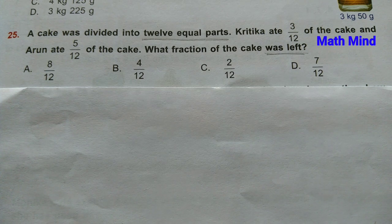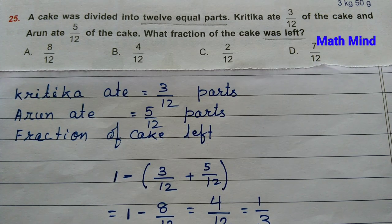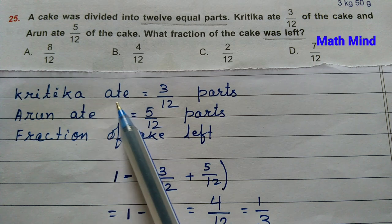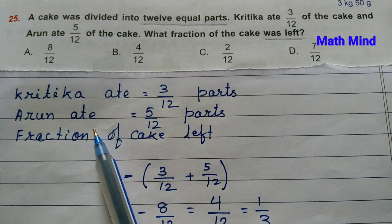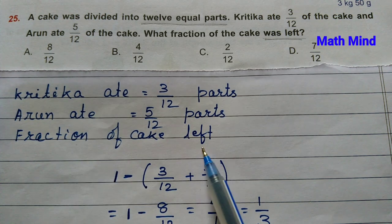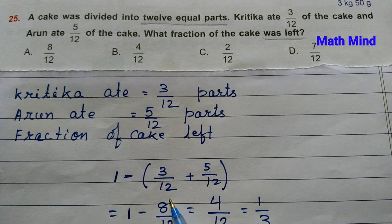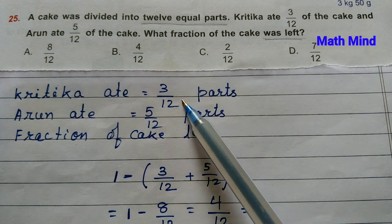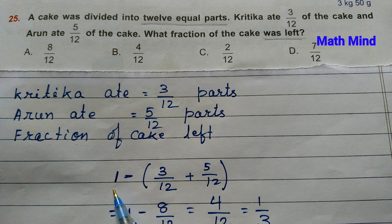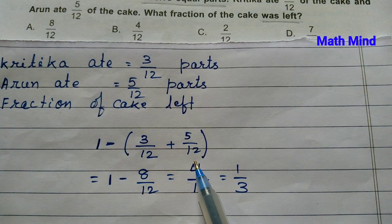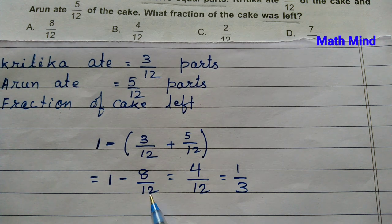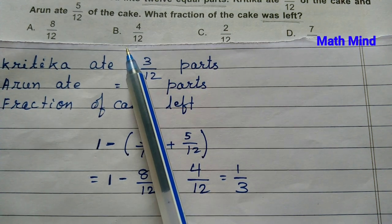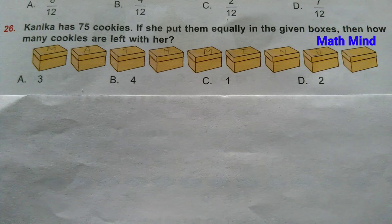Question number 25: A cake was divided into 12 equal parts. What fraction of the cake was left? Krithika ate 3/12 parts and Arun ate 5/12 parts. Fraction left equals 1 minus (3/12 plus 5/12) equals 1 minus 8/12 equals 4/12. Option B is correct: 4 by 12 parts of the cake was left.